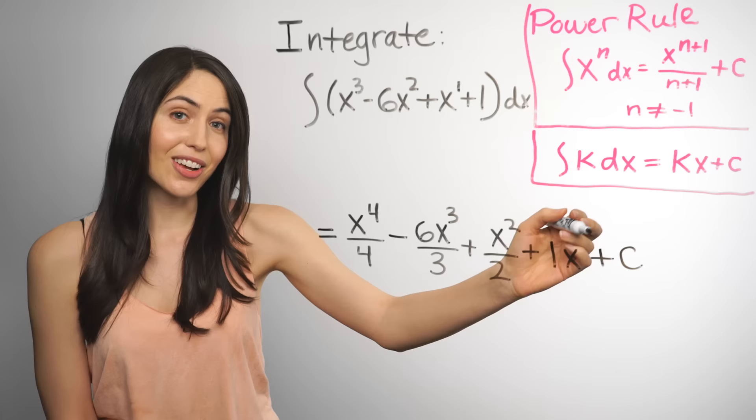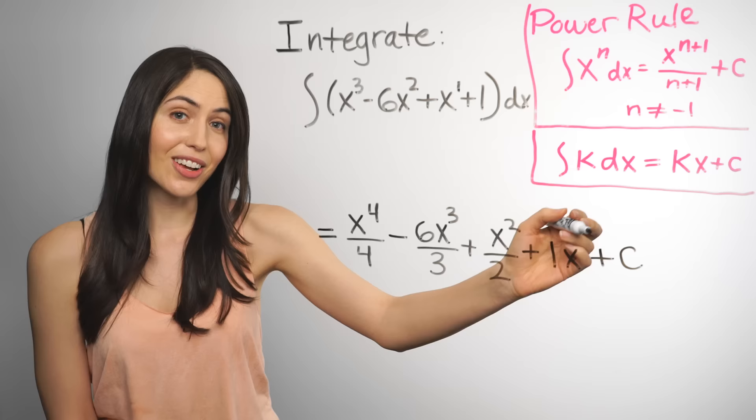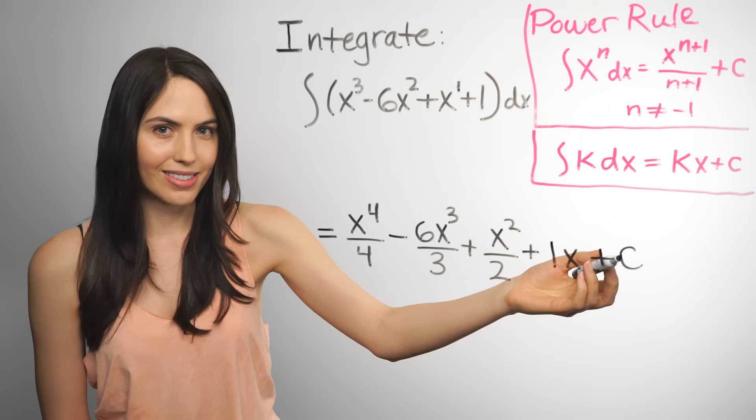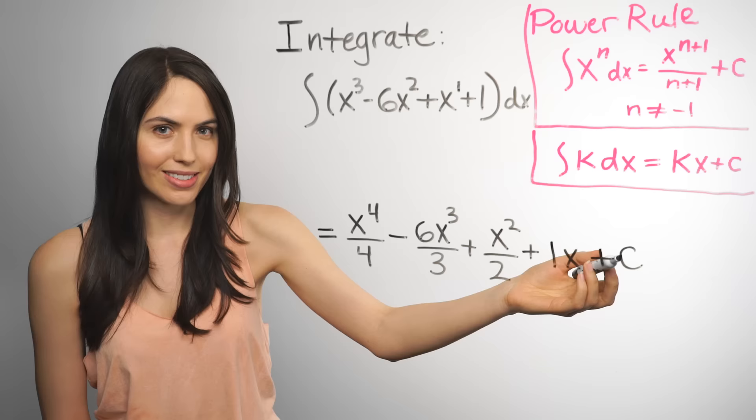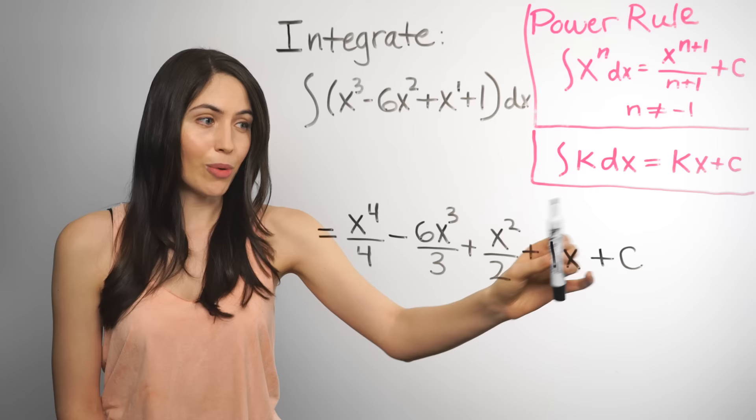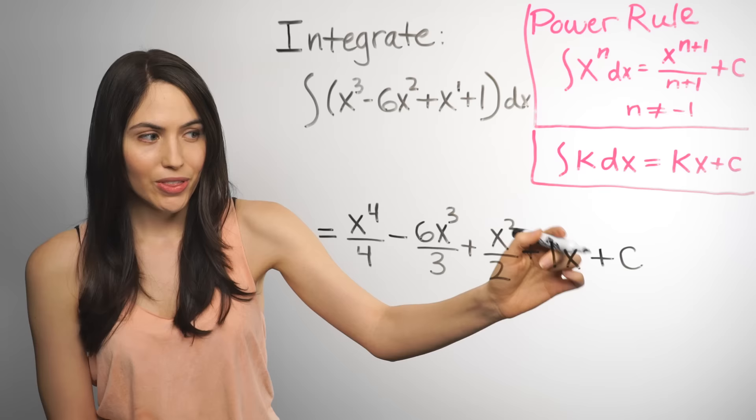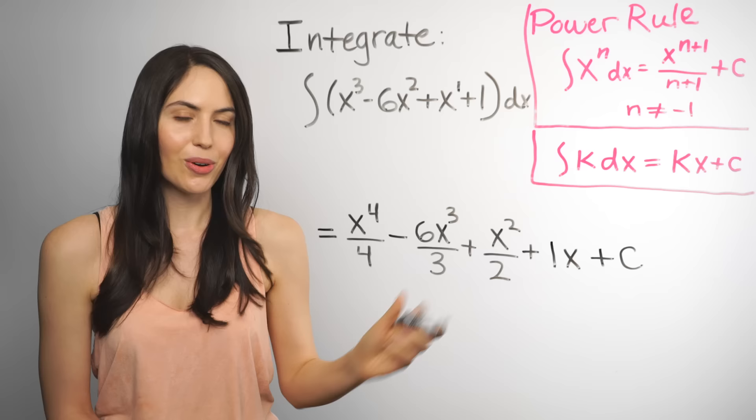And we're not done. We have to add a constant plus c at the very end. And this is important. Because we don't know if there was a number there originally, and if so, what it was. So we put this plus c as a placeholder. And it represents all possible antiderivatives. We put that there just in case there was a number there like plus 2, minus 2, minus 10, whatever it was.